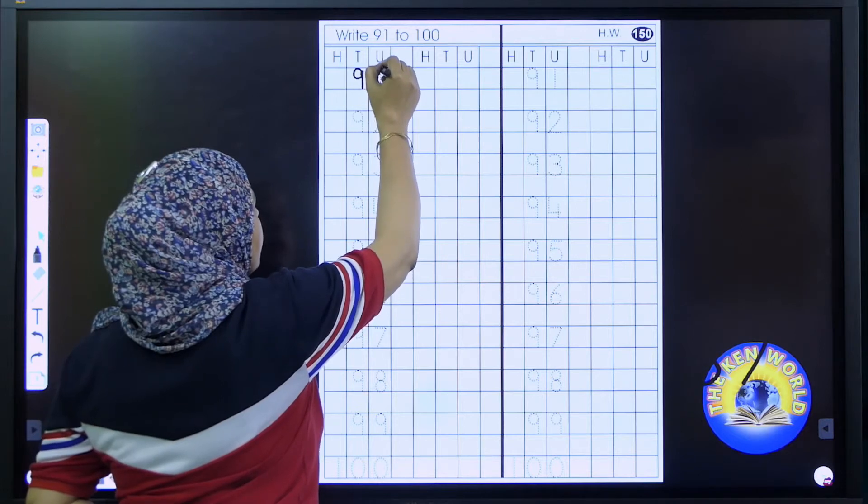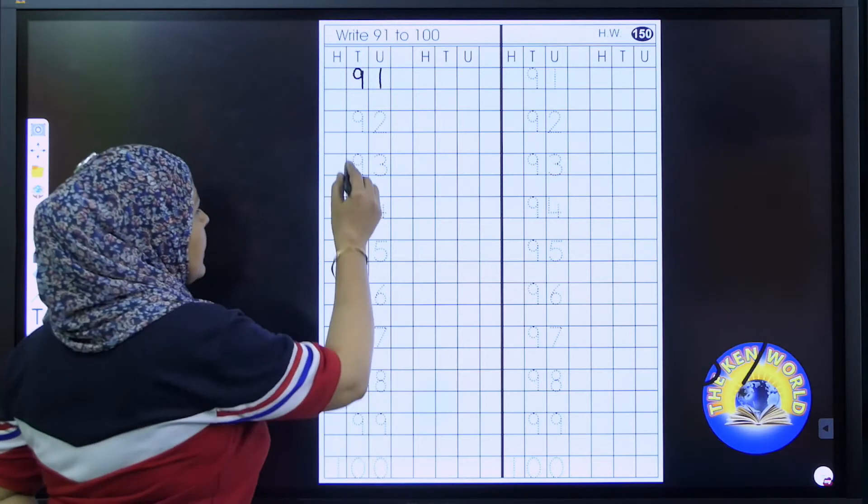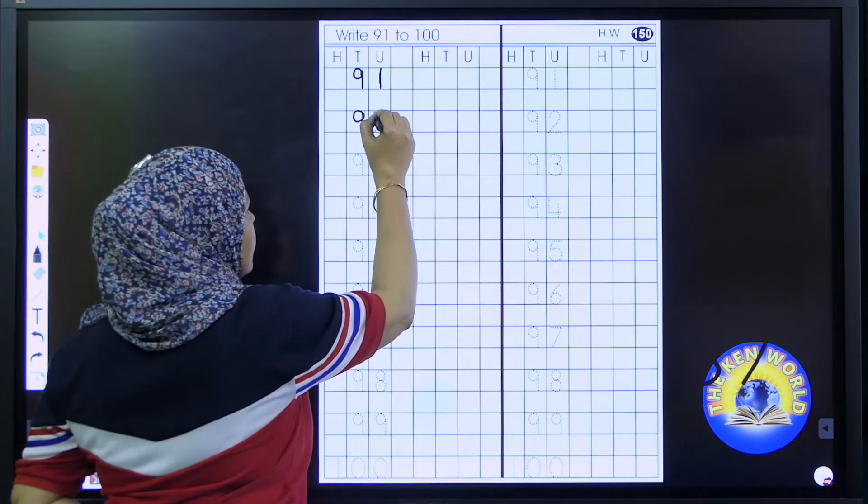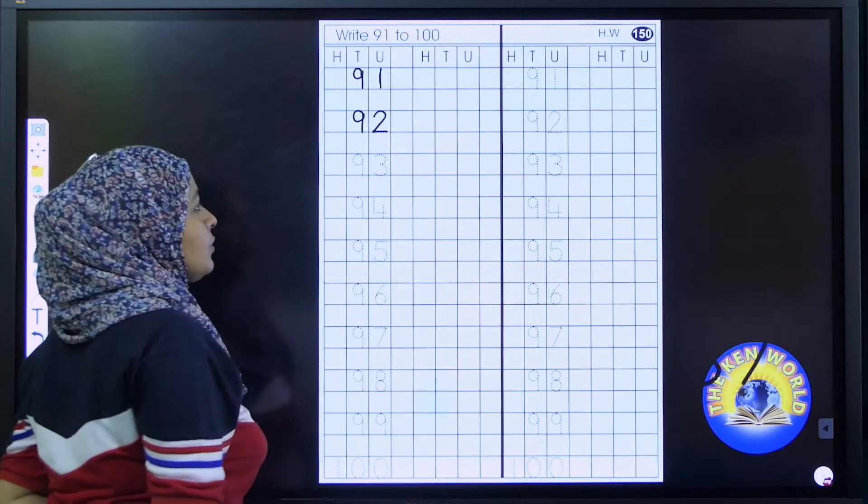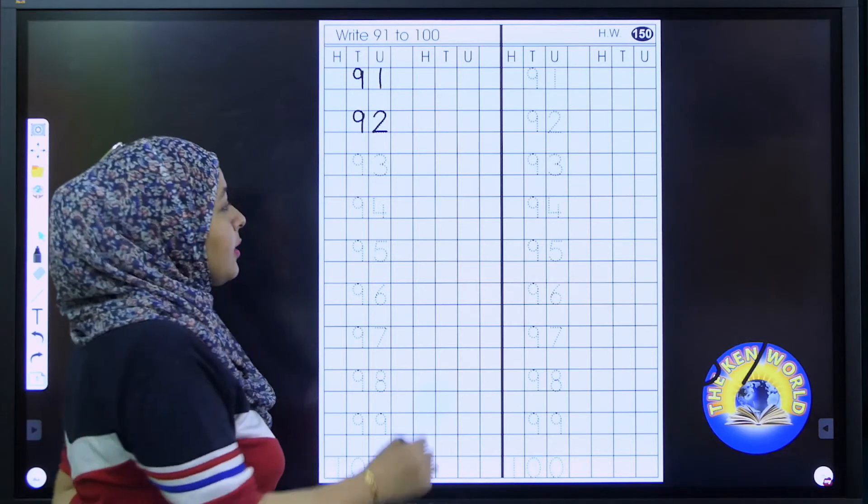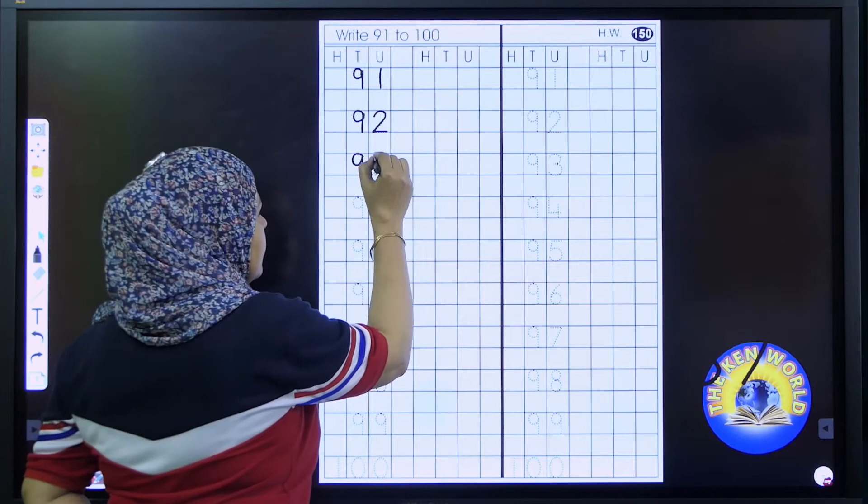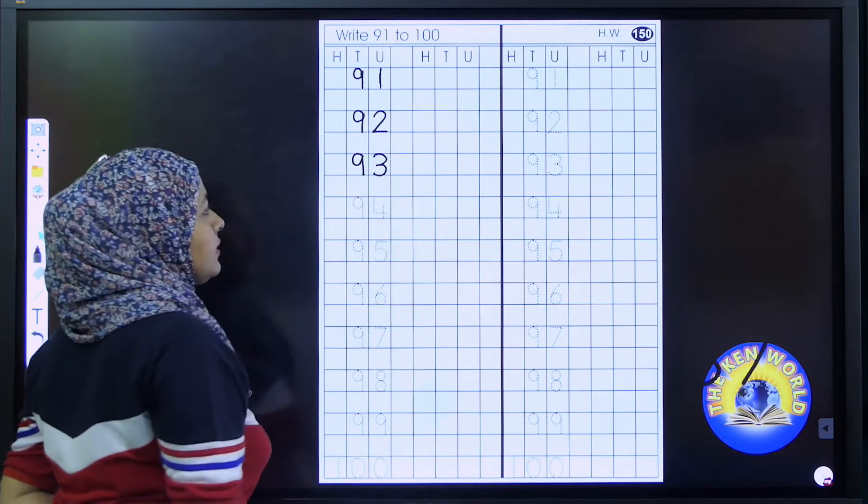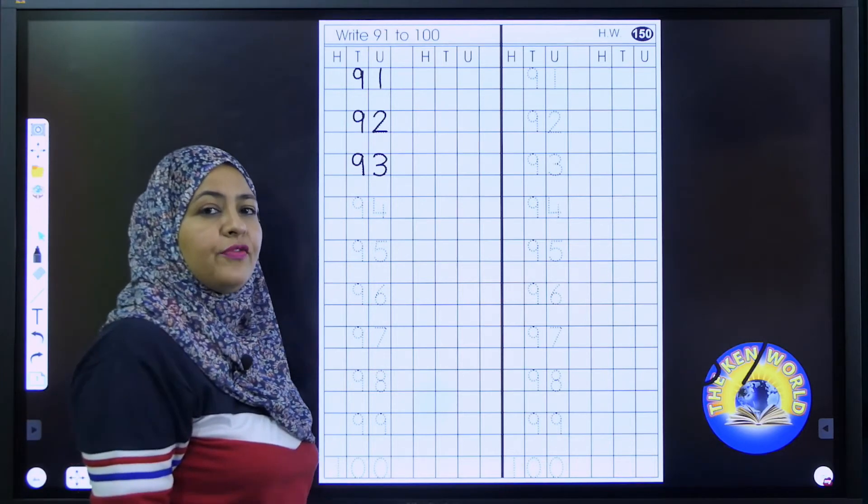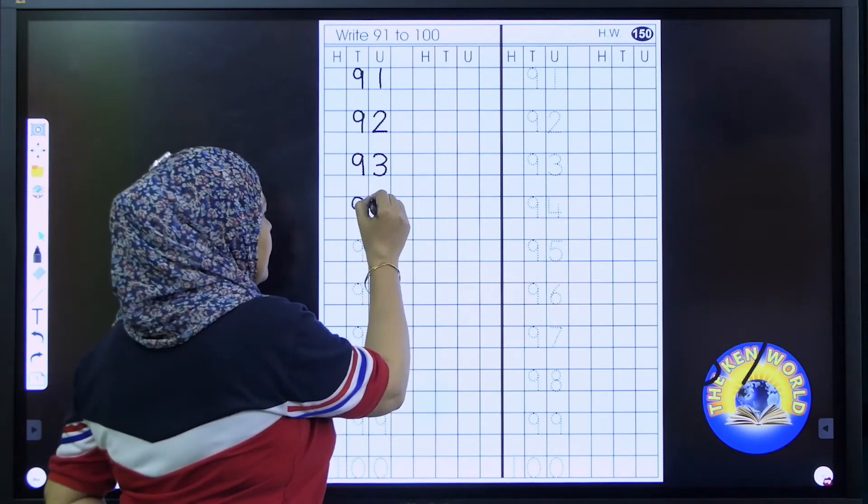9, 1, 91. After 91, it's 92. 9, 2, 92. The next number is 93. 9, 3, 93. After 93, it's 94. 9, 4, 94.